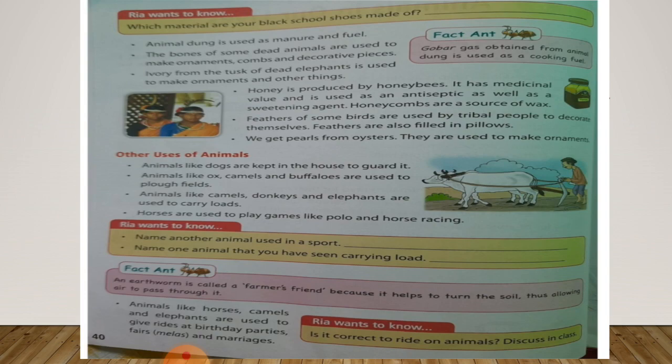That's all for today, students. In the next class we will learn about other uses of animals. You can also read this fact: gobar gas obtained from animal dung is used as a cooking fuel. Thank you, class.